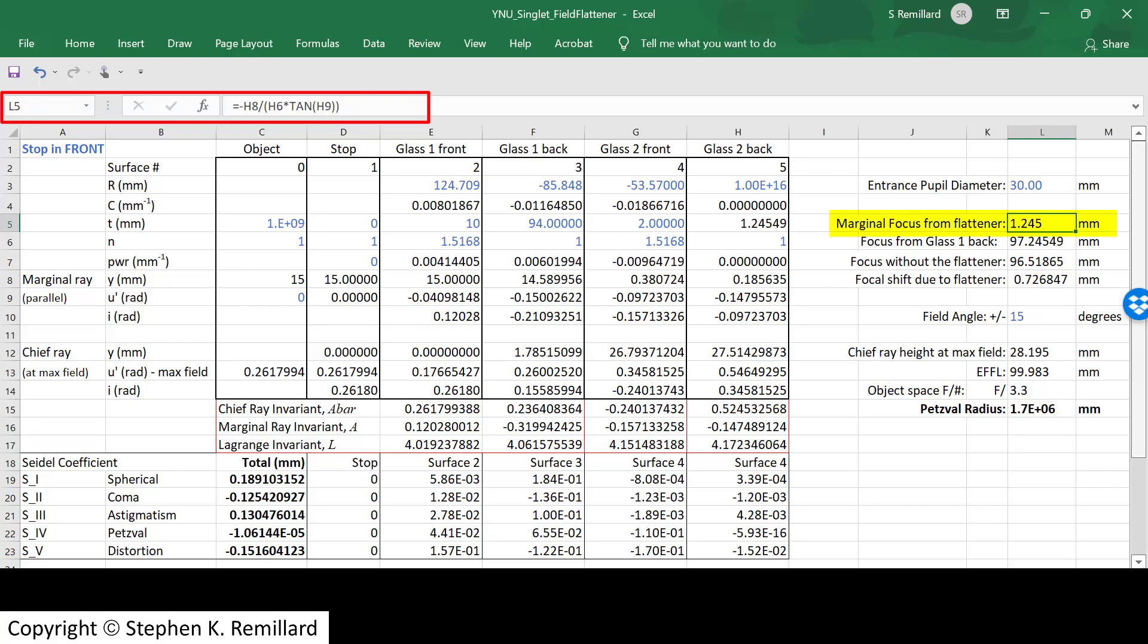Other items that are listed up here include how far the marginal focus is from the flattener, which is just geometry. It's distance from the back of glass 1, which is 97 millimeters. That's the working distance you design for. If you don't have the flattener, the paraxial focus is at 96.5. Putting the flattener in there moved the marginal focus by 726 microns. I did this at a field angle of plus or minus 15, so I didn't use a wide field of view.